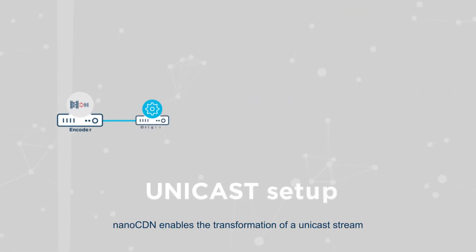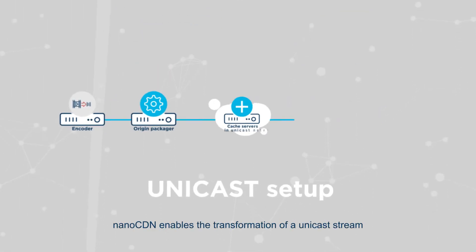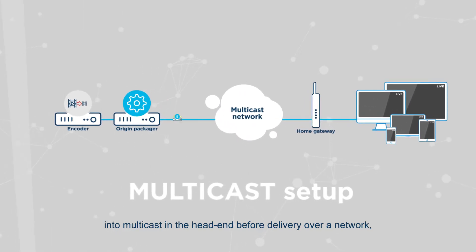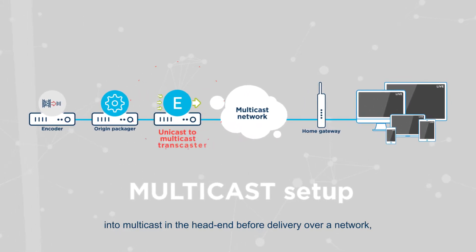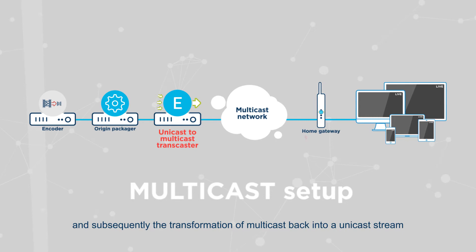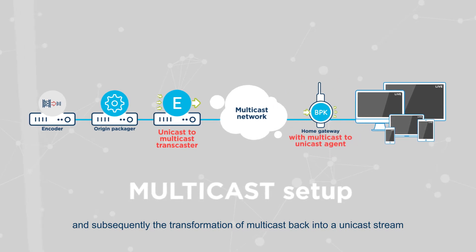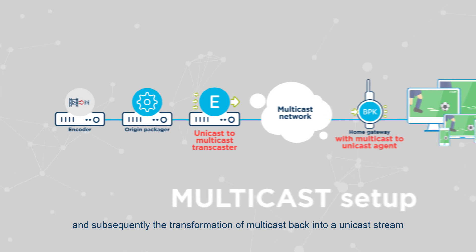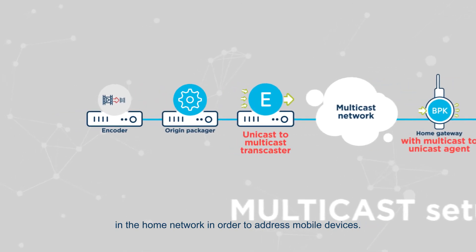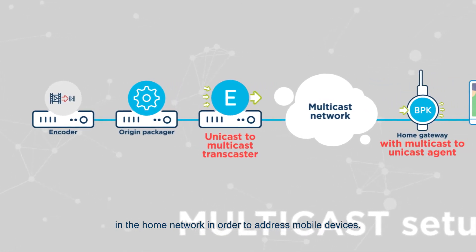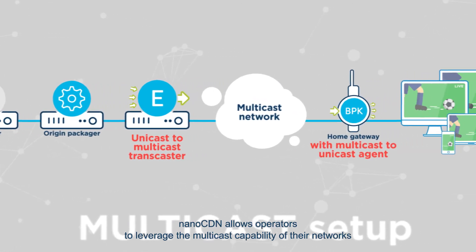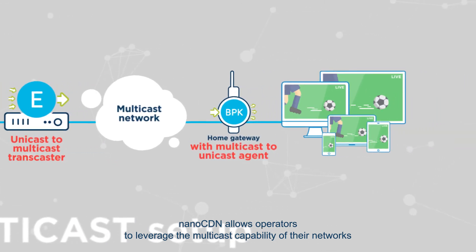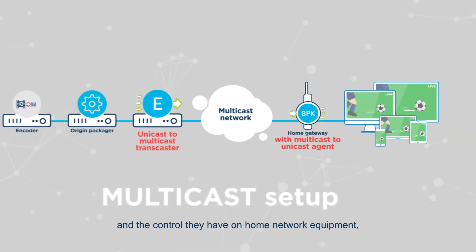Broad Peak's nano CDN multicast ABR solution solves both of these issues. Nano CDN enables the transformation of a unicast stream into multicast in the head end before delivery over a network, and subsequently the transformation of multicast back into a unicast stream in the home network in order to address mobile devices.